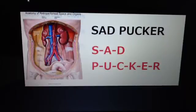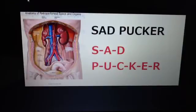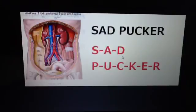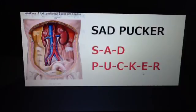K is kidneys, E is esophagus, R is rectum. So to review: S suprarenal, A aorta and inferior vena cava, D duodenum, P pancreas except for the tail, U ureters, C colon ascending and descending, K kidneys, E esophagus, R rectum.